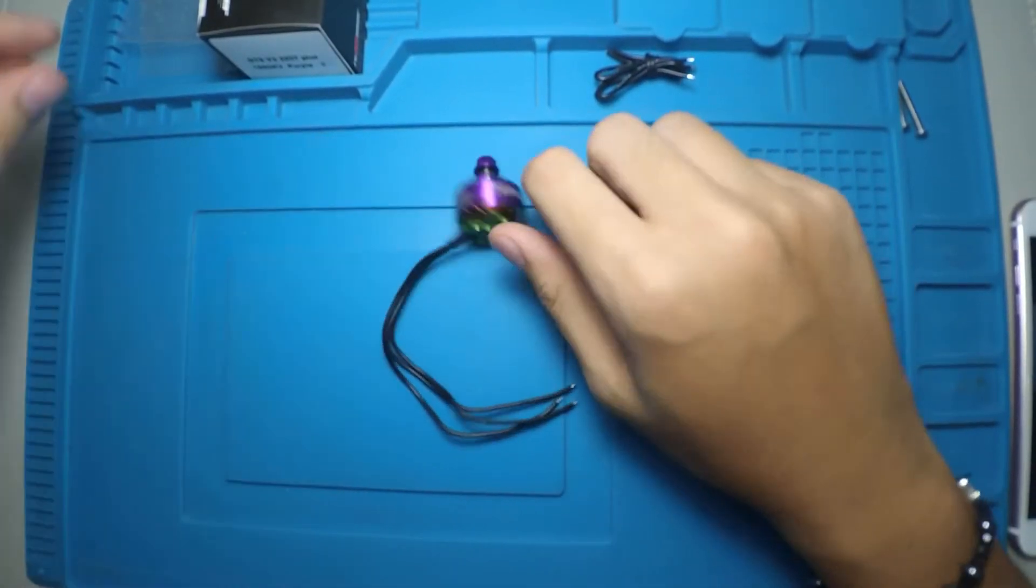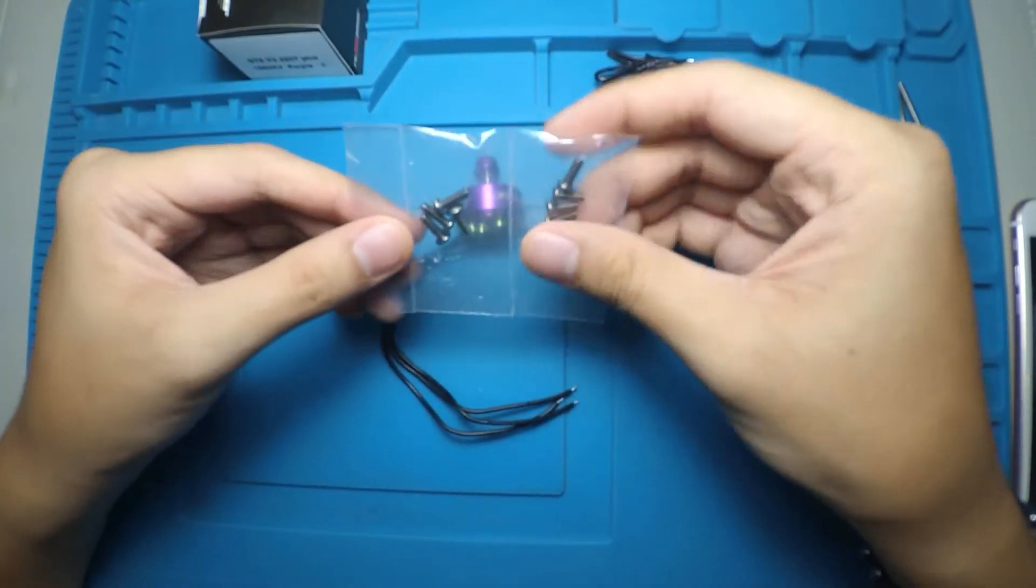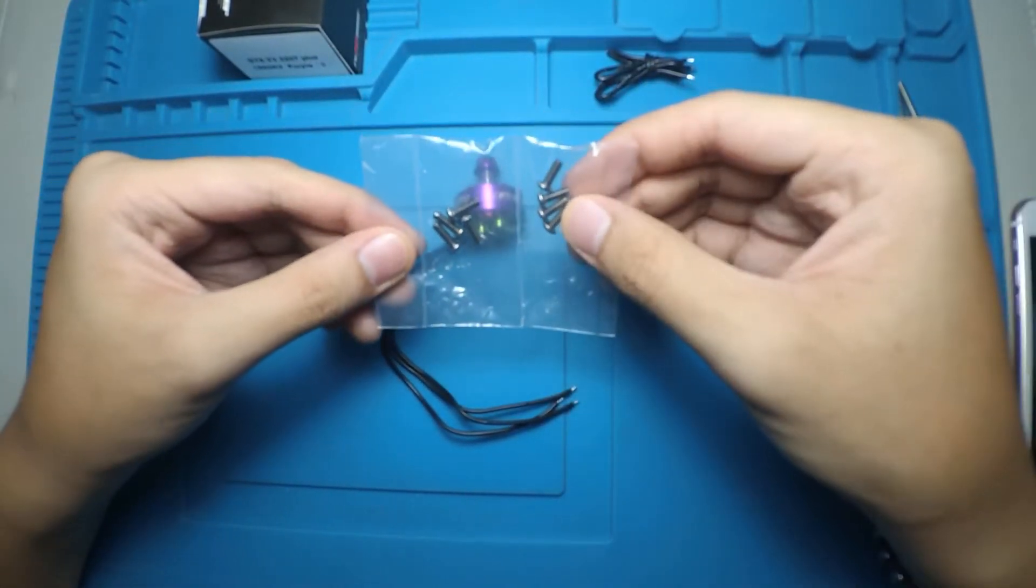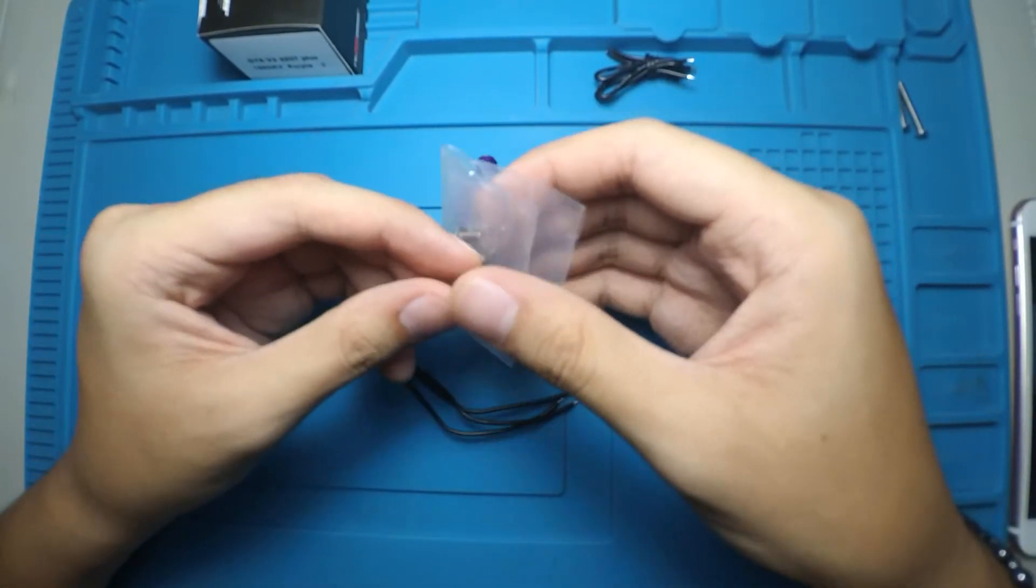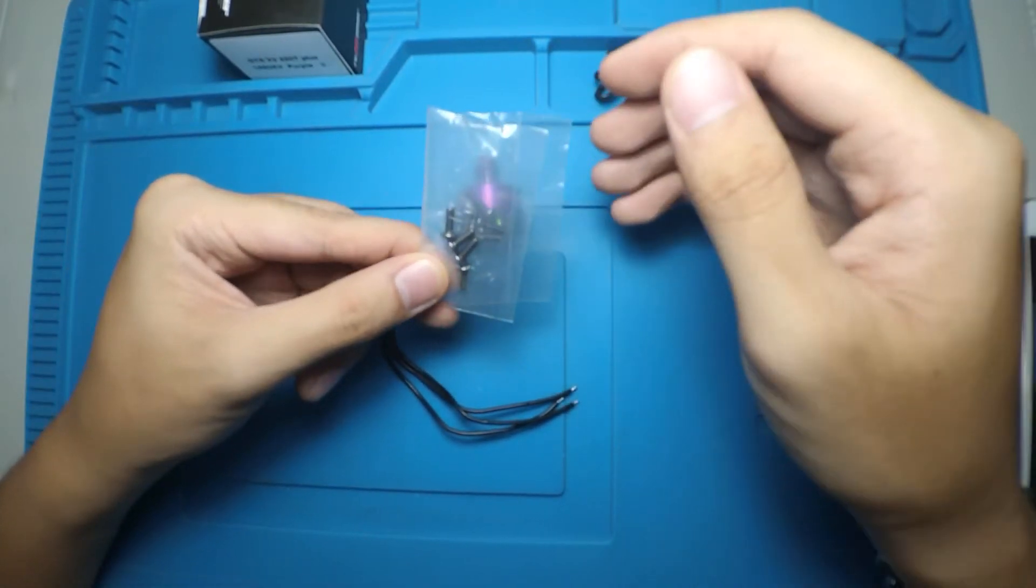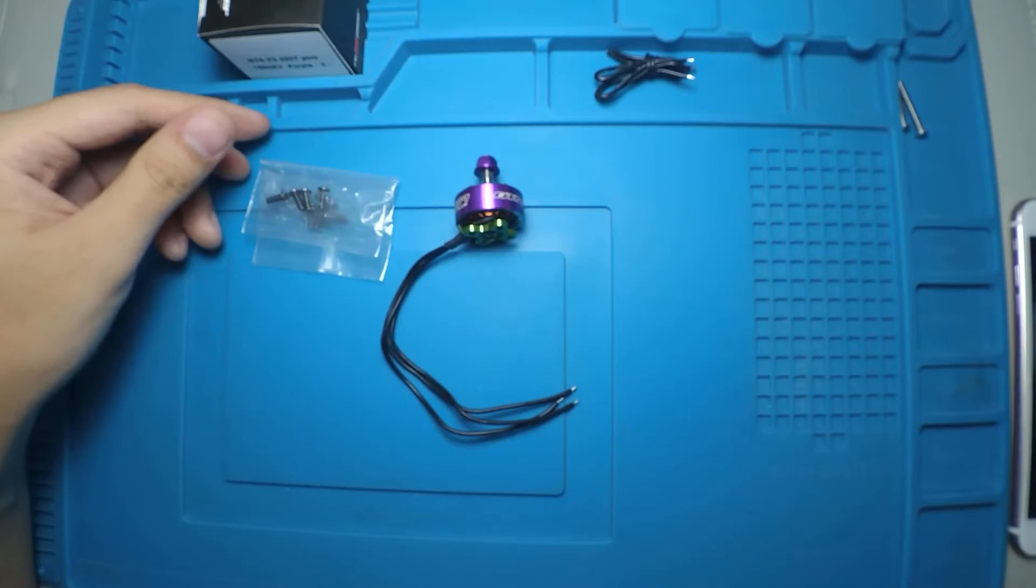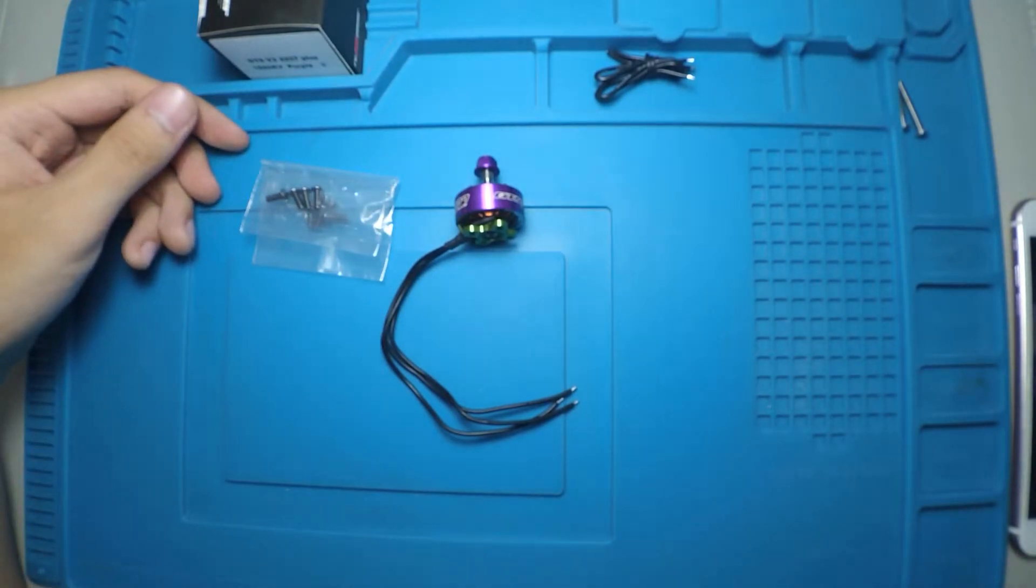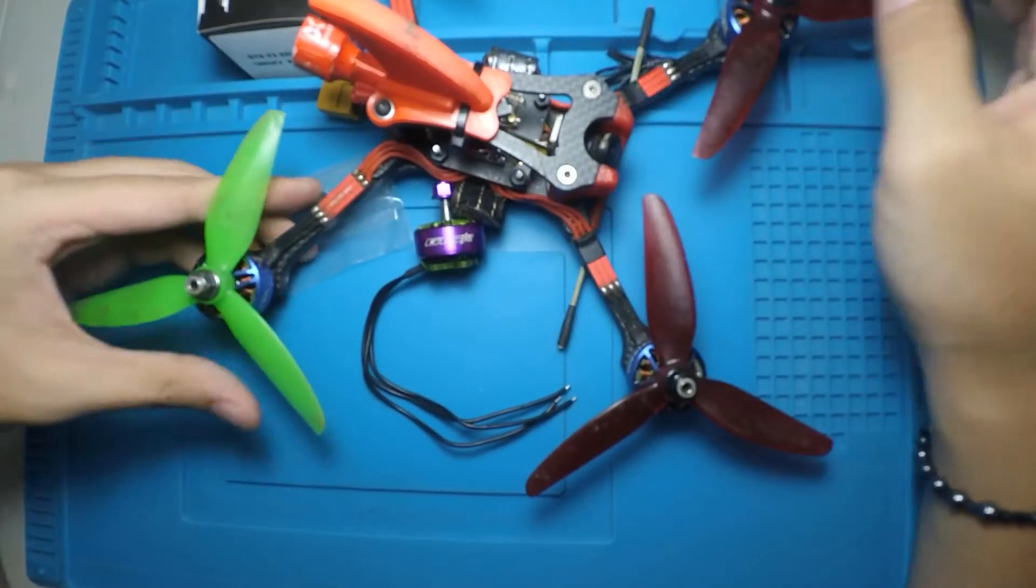Another cool thing with this motor is that it comes with screws for 5 millimeter and 6 millimeter arms. Lots of motors today are coming with screws for 4mm and 5mm arms, but more and more frames today are coming out with 6 millimeter arms like my Transteck Laser S. By the way, thank you to Transteck Racing Drones for sponsoring me with my frames.